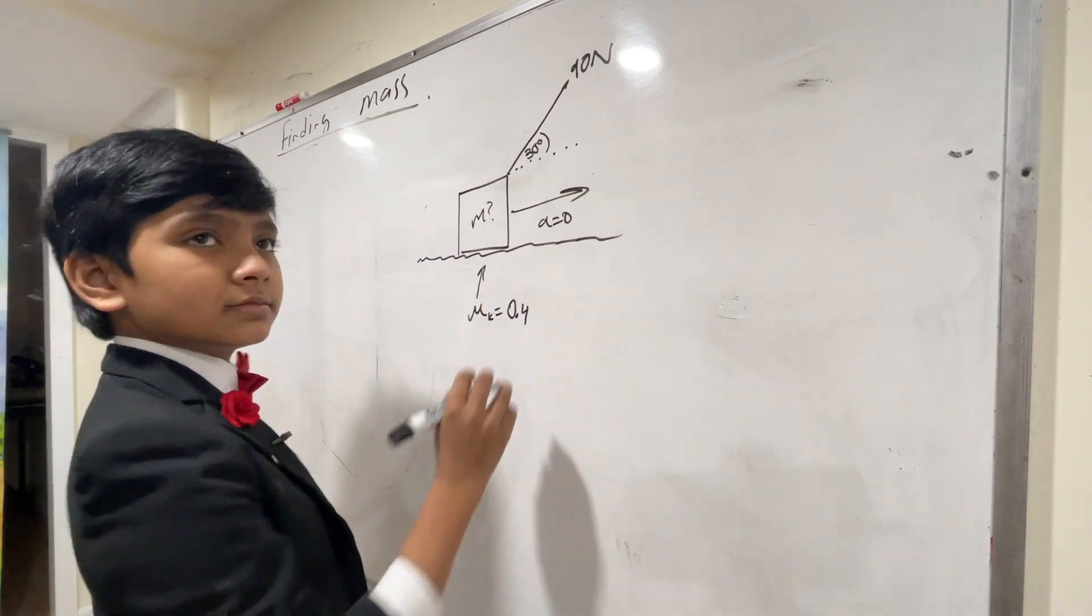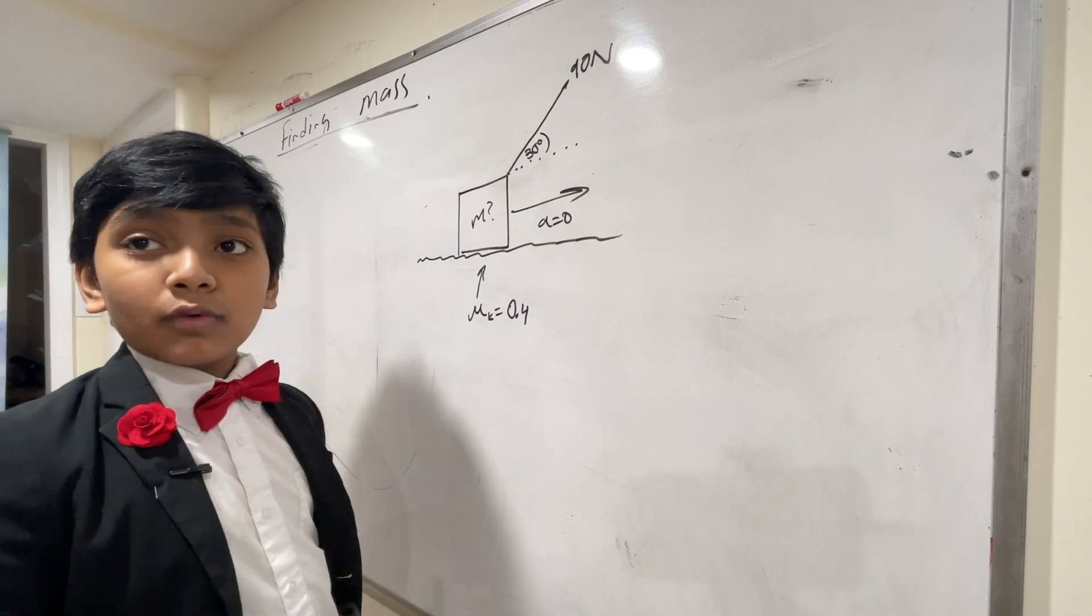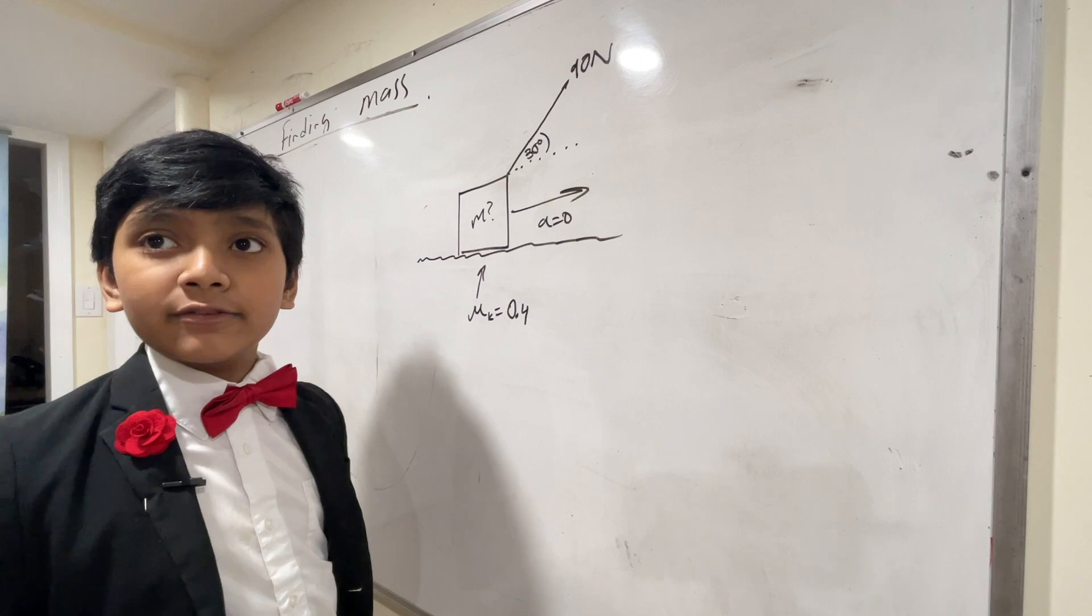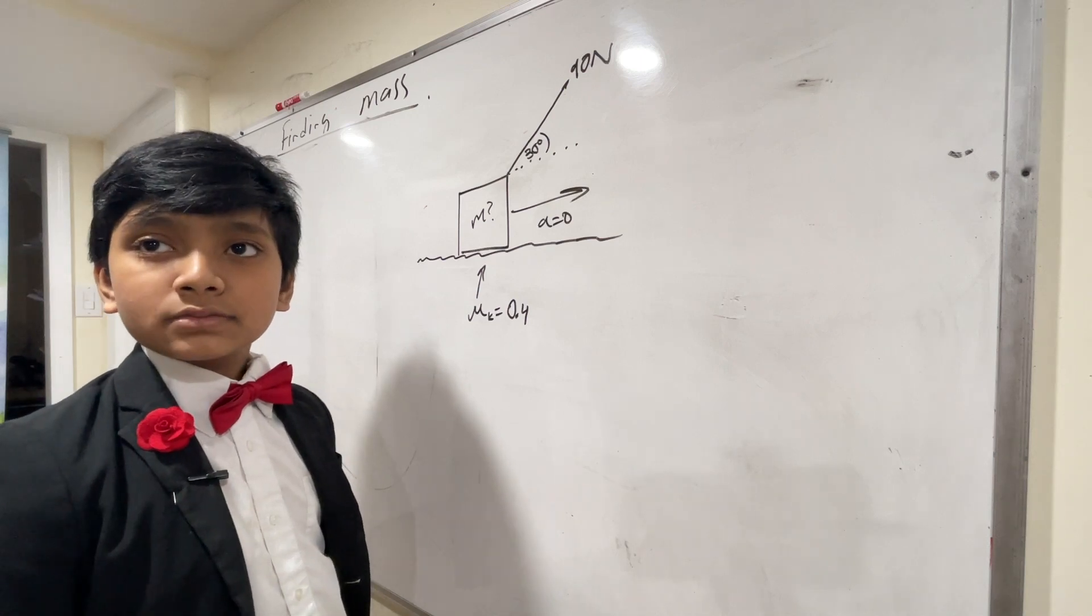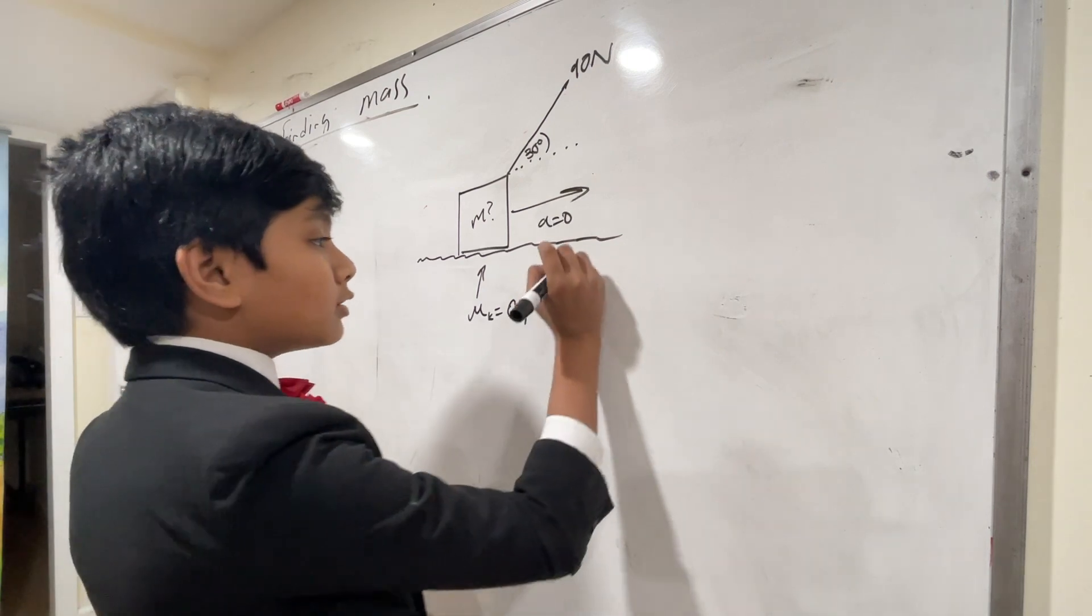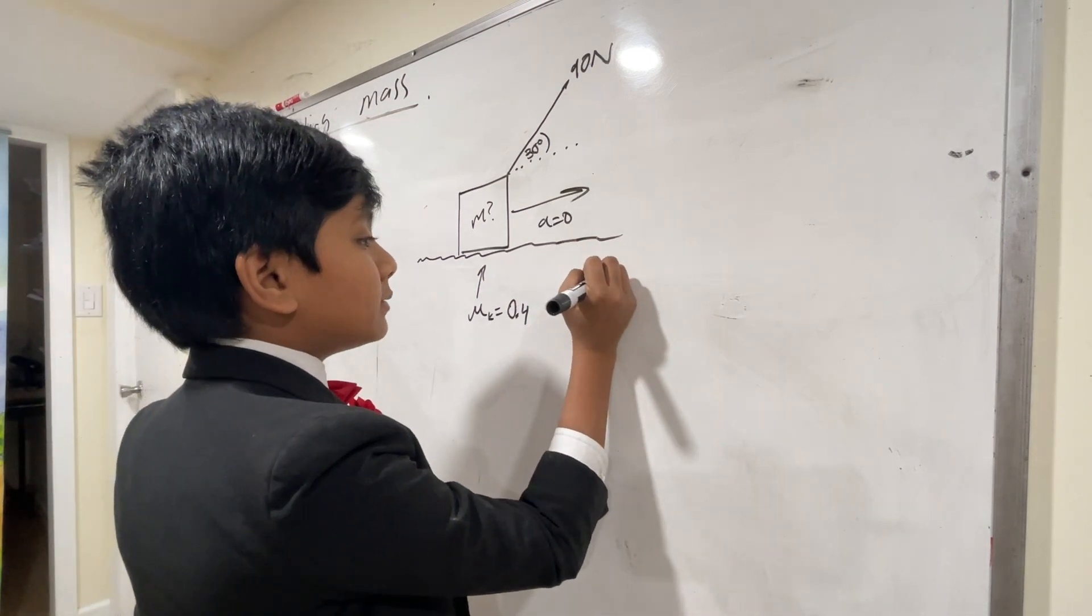All right. So what is equilibrium? Equilibrium is when the sum of forces in any particular direction is equivalent to 0. Is it possible for an object to be moving and still be in equilibrium? Yes, indeed it is. Because in equilibrium, only the acceleration must be 0.